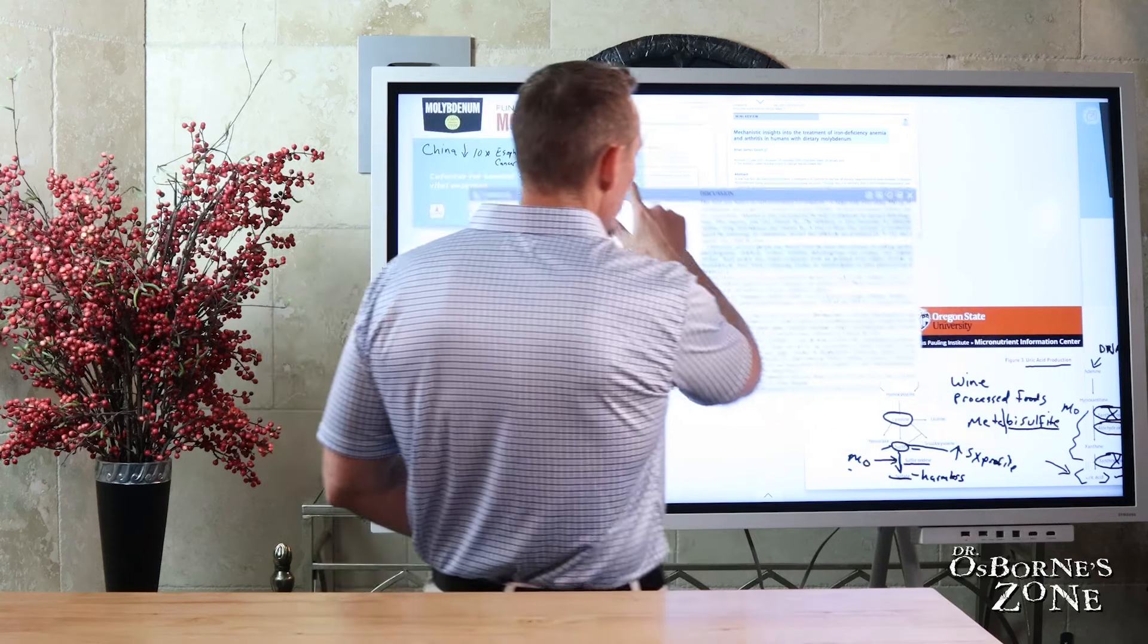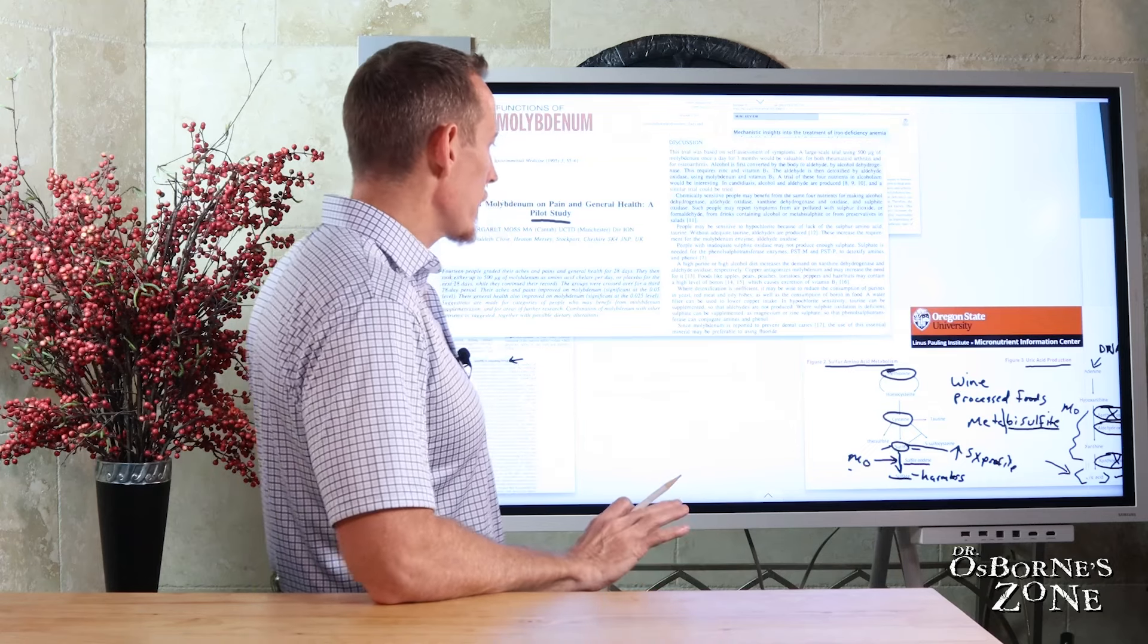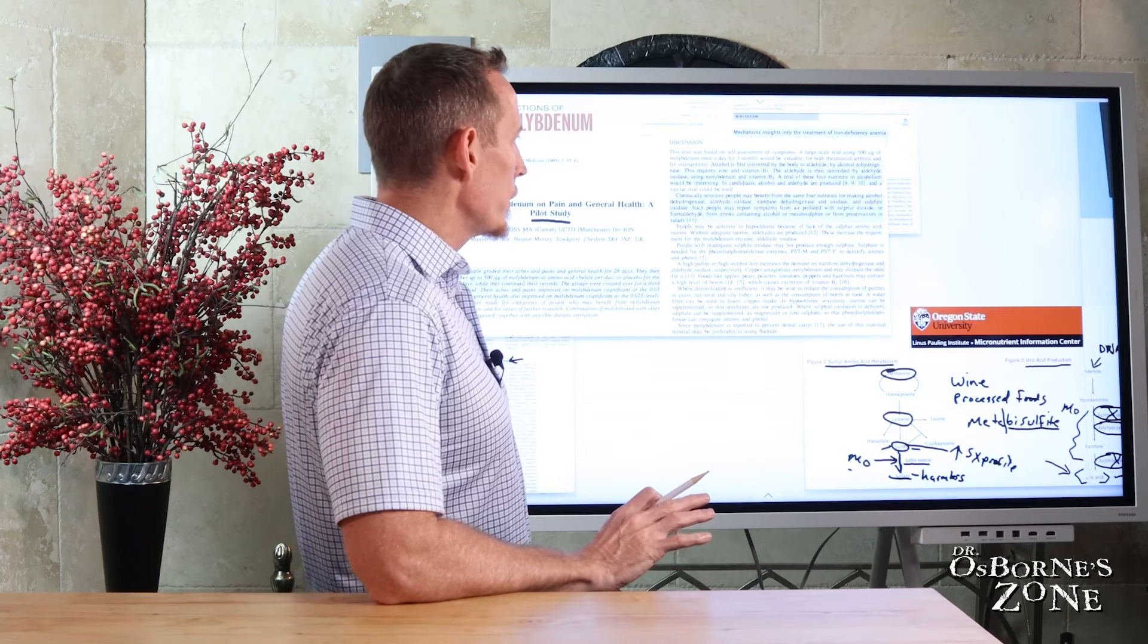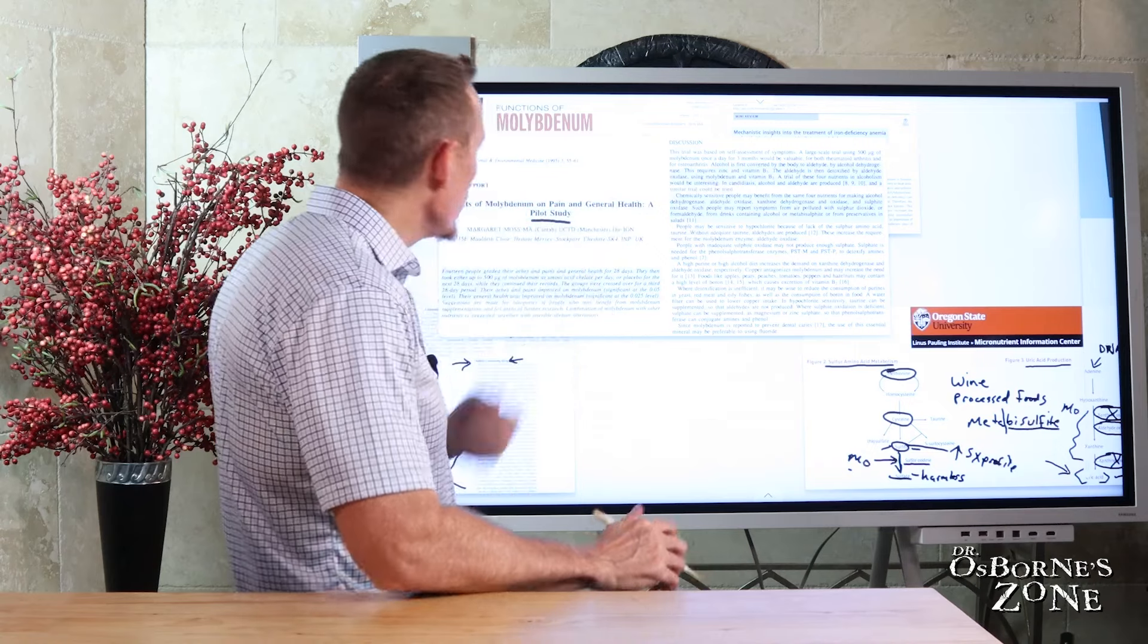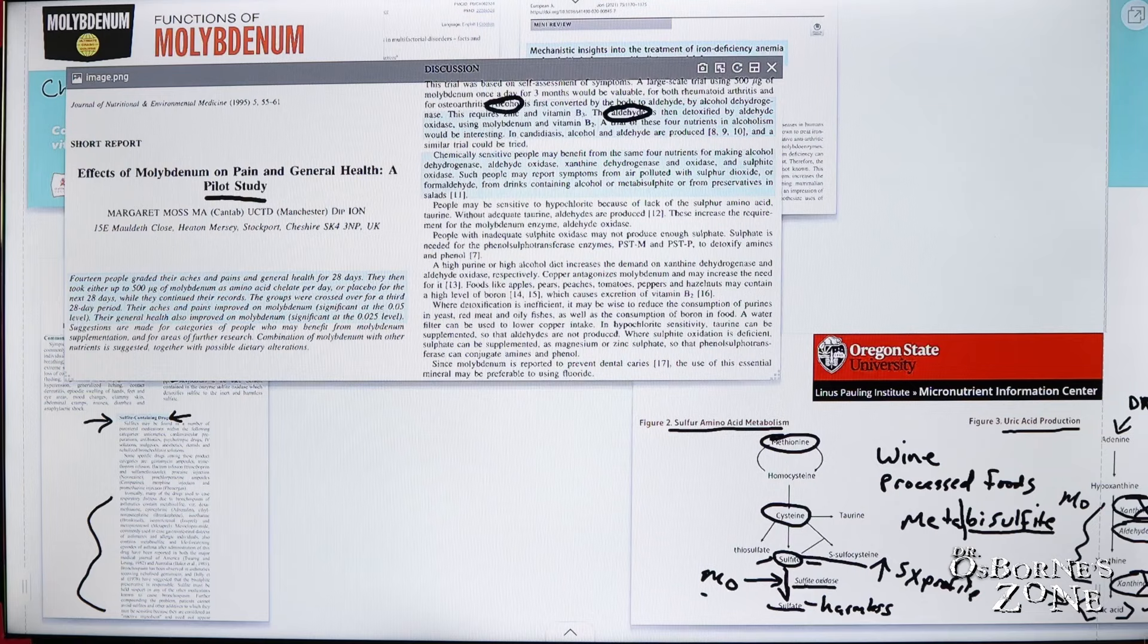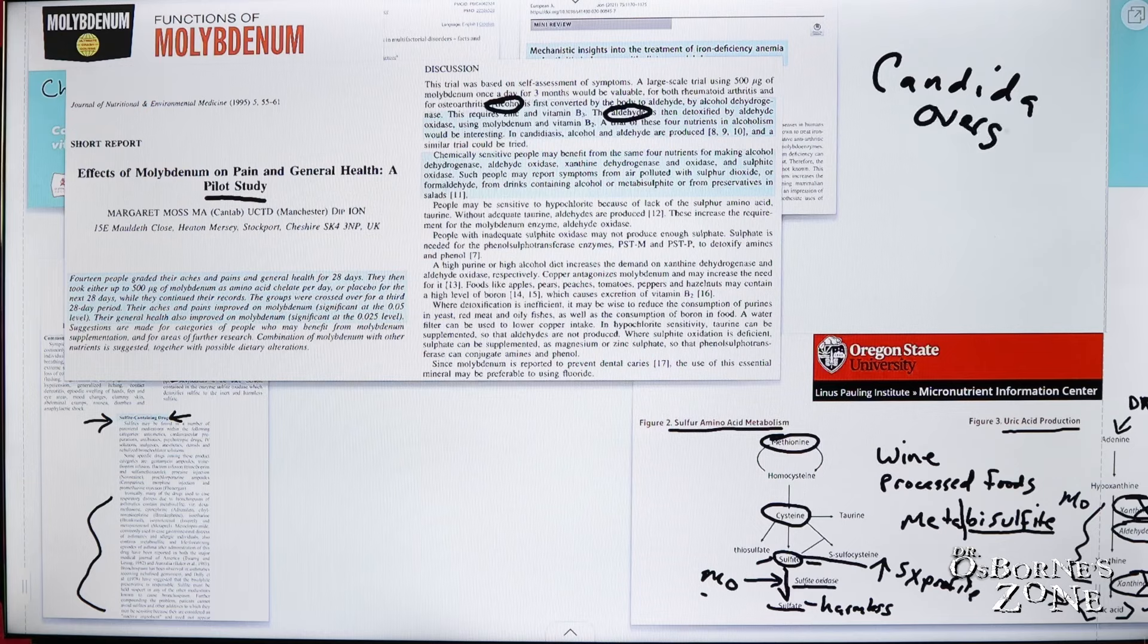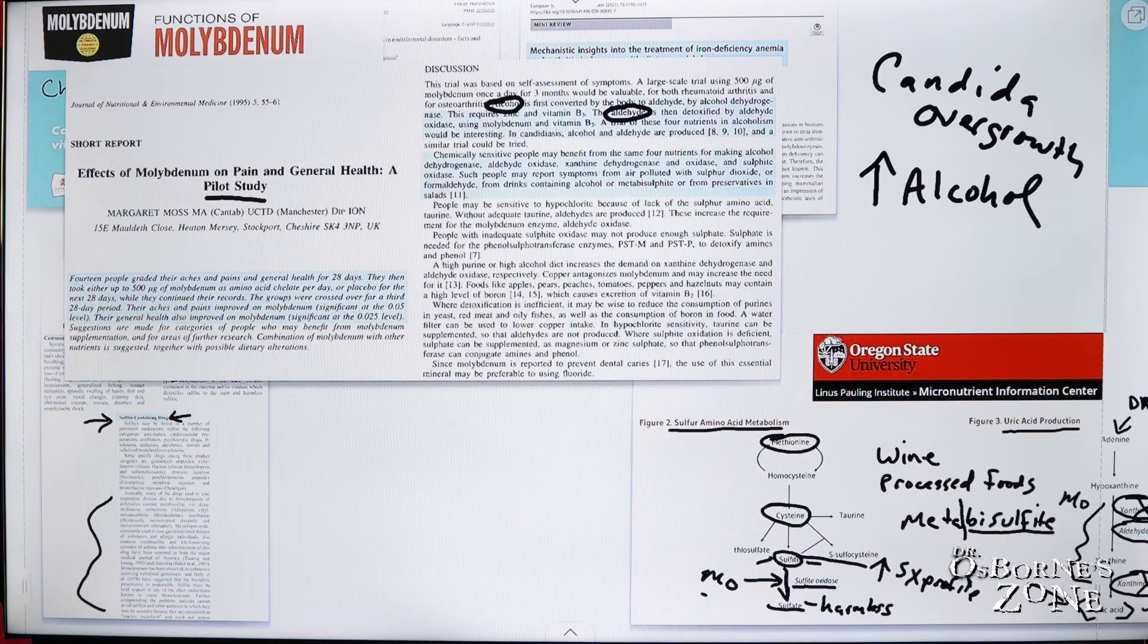Moving over here, part of that research, part of what they think is happening, in other words, there's several different mechanisms at play as to why they think molybdenum supplementation can potentially reduce joint pain. And one of them actually has to do with the function of the breakdown of aldehyde. So there are certain people when they're drinking alcohol, for example, or if they have a candida overgrowth. Remember, candida overgrowth can contribute to alcohol production in your gut.